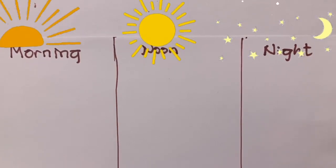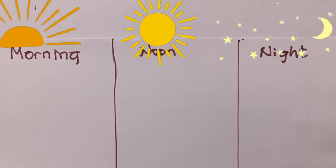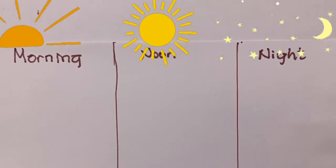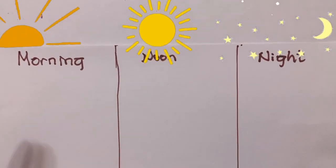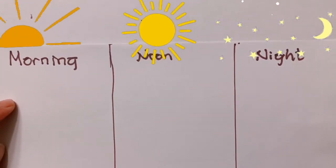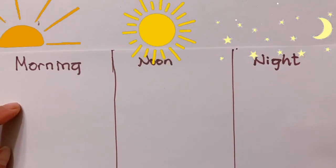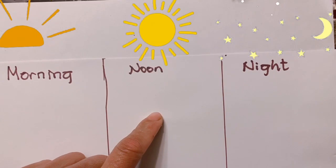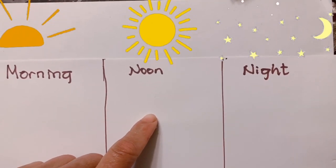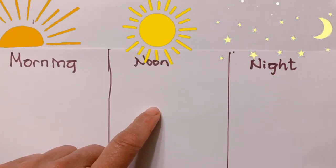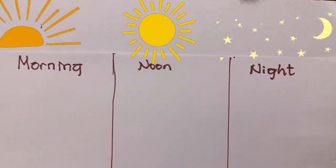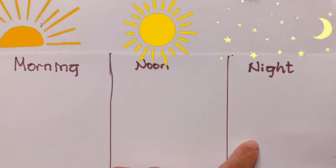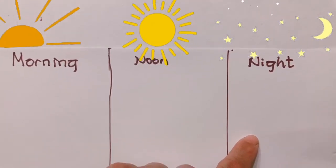Do you remember our schedule when we go to school? First, when you arrive at school, we wash our hands and then we do our class. Second, we go outside and play during noon time and then lunch. Third, in the afternoon, almost at night, mommy is going to pick you up and bring you home.